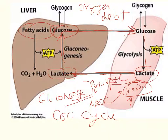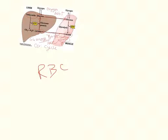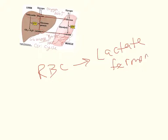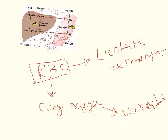An interesting fact is that red blood cells will actually only use the lactate fermentation pathway — they make all of their energy from lactate fermentation. The reason is that red blood cells carry oxygen to all other tissue in the body. If they were using the Krebs cycle, they would be consuming that oxygen and deliver less to the tissue. So red blood cells use no oxygen in their energy metabolism and export all their lactate to the liver.